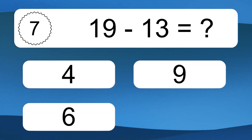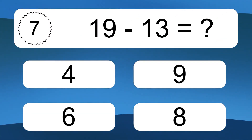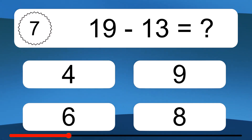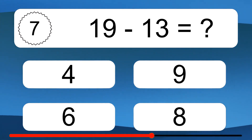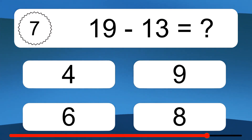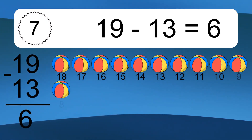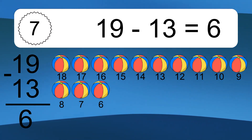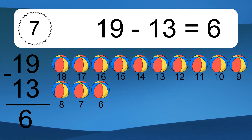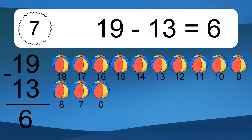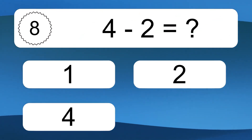19 minus 13 equals what? 19 minus 13 equals 6. Let's count it. 18, 17, 16, 15, 14, 13, 12, 11, 10, 9, 8, 7, 6.